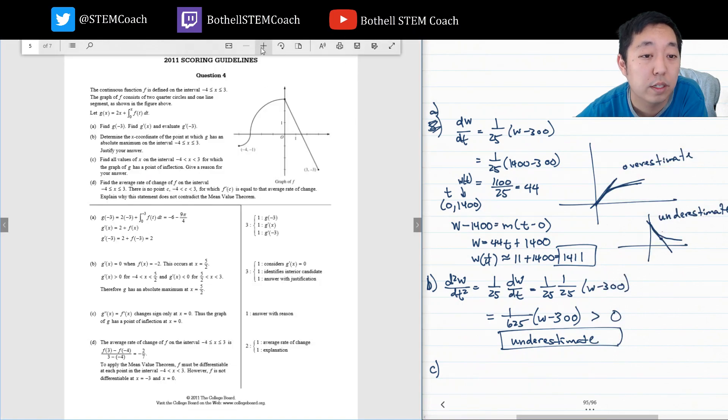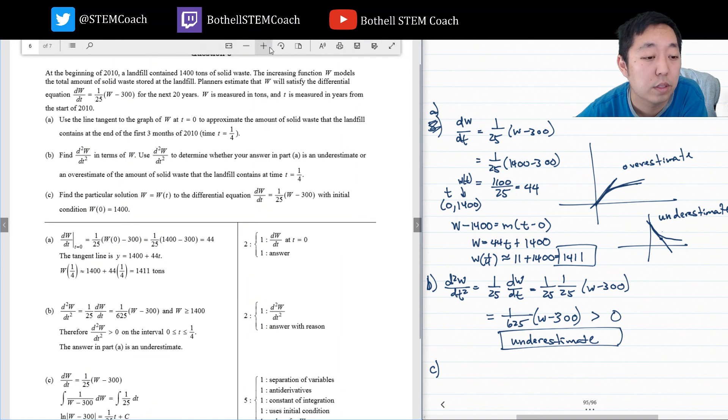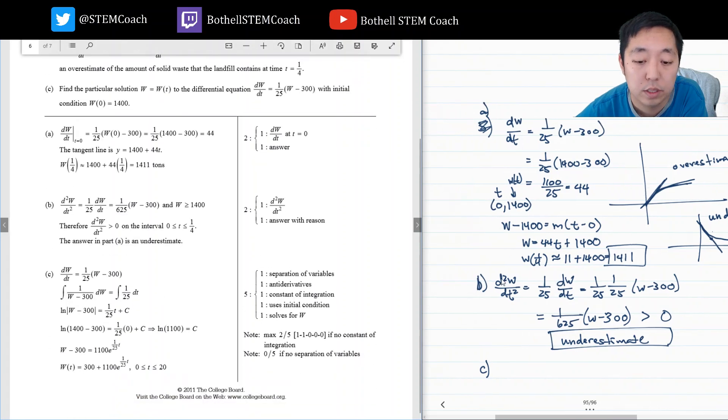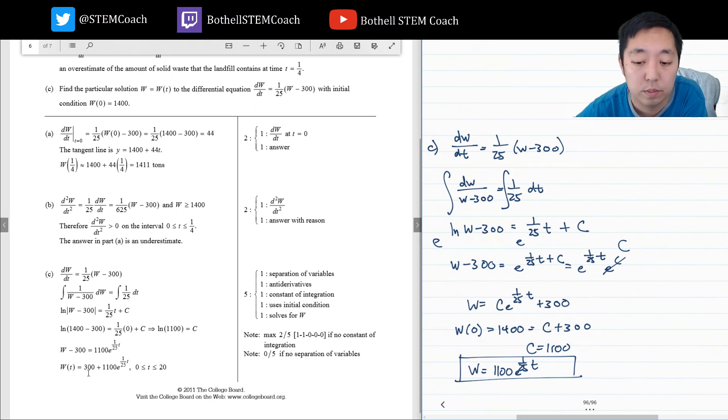So let's take a look at how we did. Oh, this is the wrong question. A, 44, 1411 tons. I didn't write the units, tons. It's an underestimate because the second derivative is less than zero. And then c, oh, I forgot this plus 300 part. It's this equation right here. I should have plugged this equation right here, but with 1100 plus 300. Okay, cool.